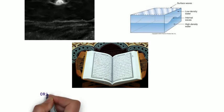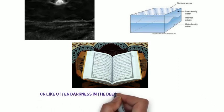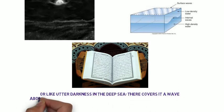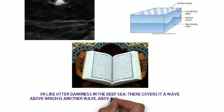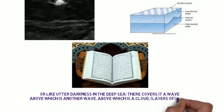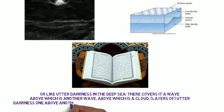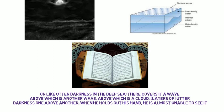Chapter 24, verse 40: Or like utter darkness in the deep sea, there covers it a wave above which is another wave, above which is a cloud, layers of utter darkness one above another, when he holds out his hand, he is almost unable to see it, and to whomsoever Allah does not give light, he has no light.